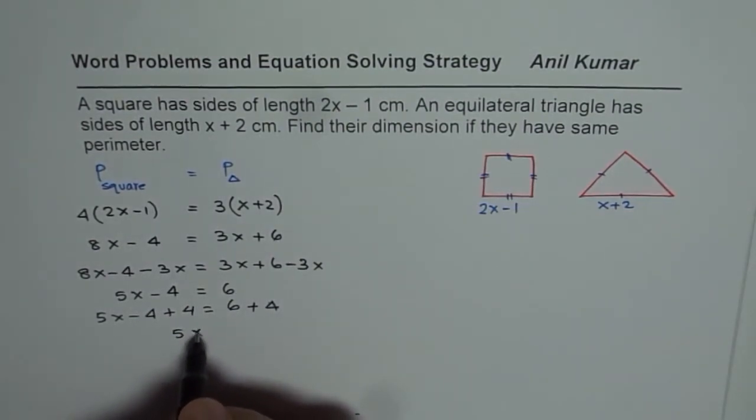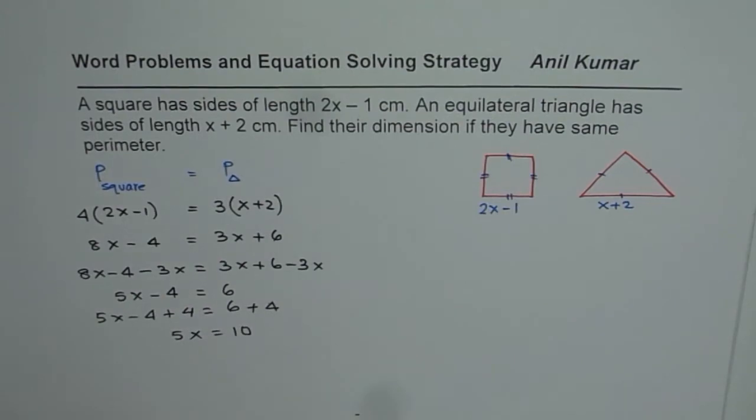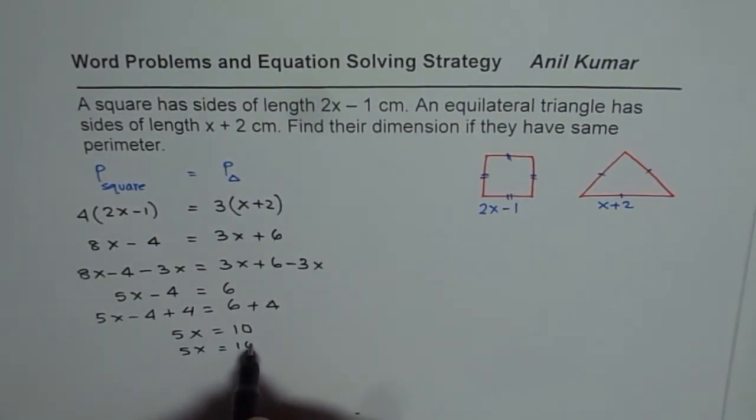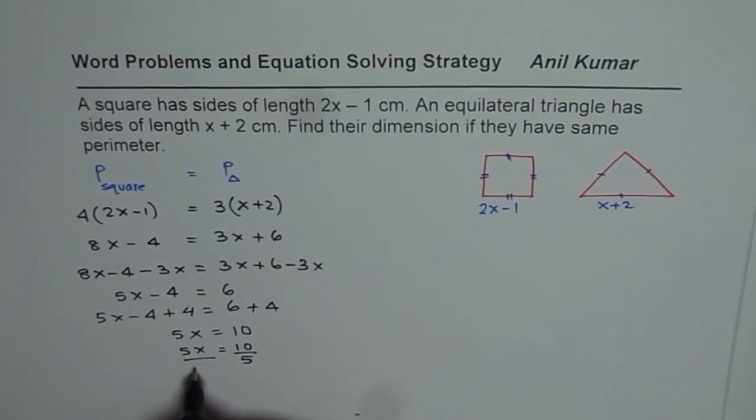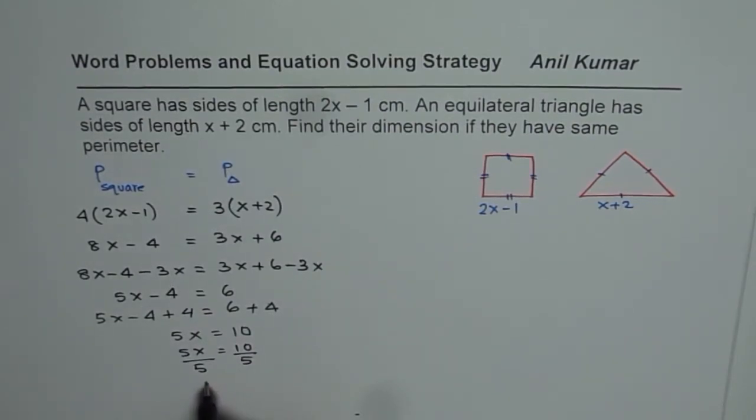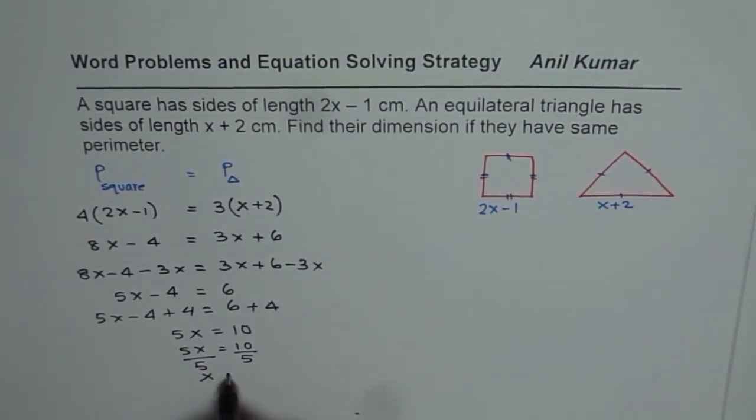Then, to get the value of x, we will divide both sides by 5. And that gives us x equal to 2.